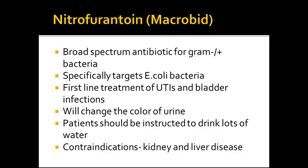Nitrofurantoin, or Macrobid, is a broad-spectrum antibiotic for gram-negative and positive bacteria. It specifically targets E. coli bacteria, which typically causes UTIs, or urinary tract infections. It is the first-line treatment for urinary tract infections and bladder infections. It will sometimes change the color of urine to an orangish or greenish color. Patients should be instructed to drink lots of water while taking this medication. It is contraindicated in people with kidney and liver disease.